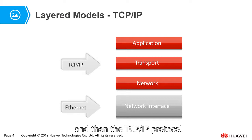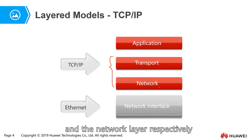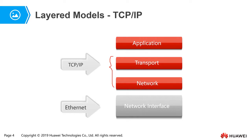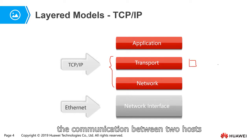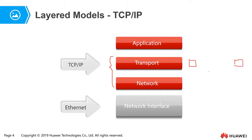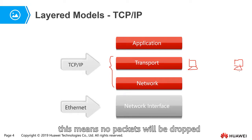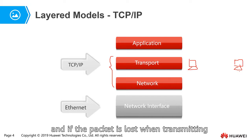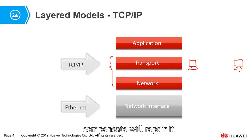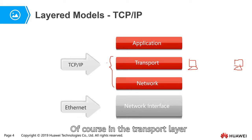The TCP/IP protocol works at the transport layer and the network layer. The transport layer confirms that the communication between two hosts is reliable — that means no packets will be dropped. If a packet is lost when transmitting, then the transport layer will compensate and repair it. The well-known transport layer protocol is TCP.